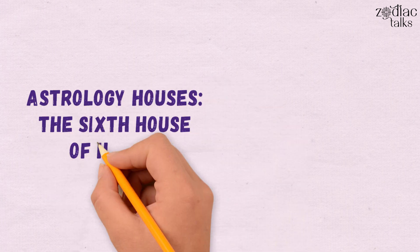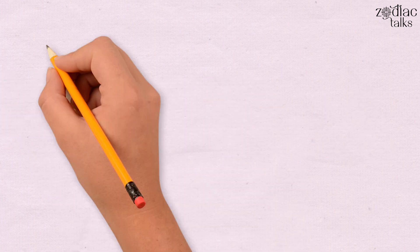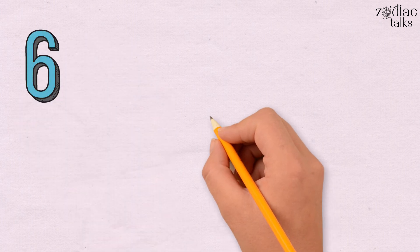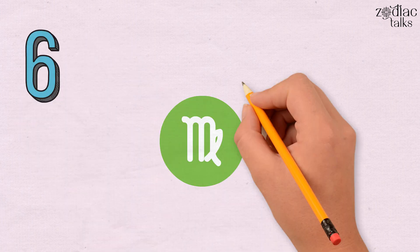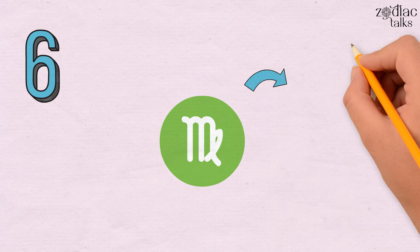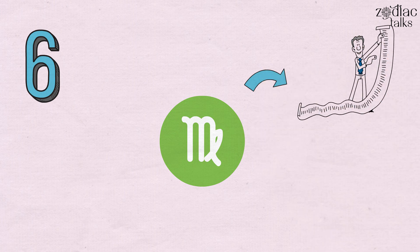Astrology Houses: The Sixth House of Health. The Sixth House is related to the zodiac sign Virgo and the planet Mercury. It represents the area of life where we develop our routines and carry out our work.